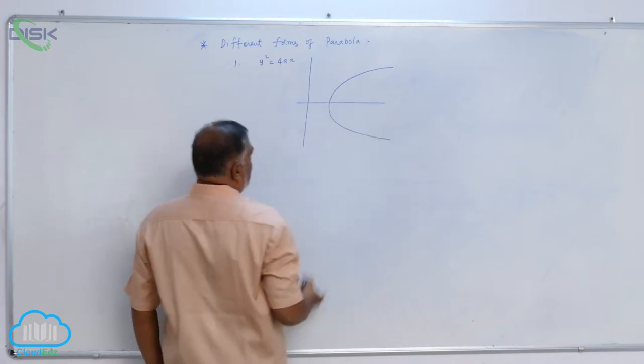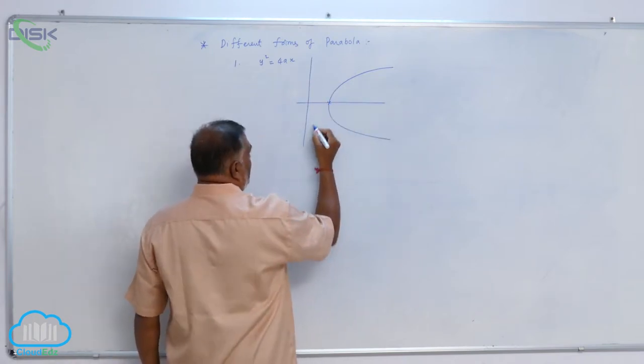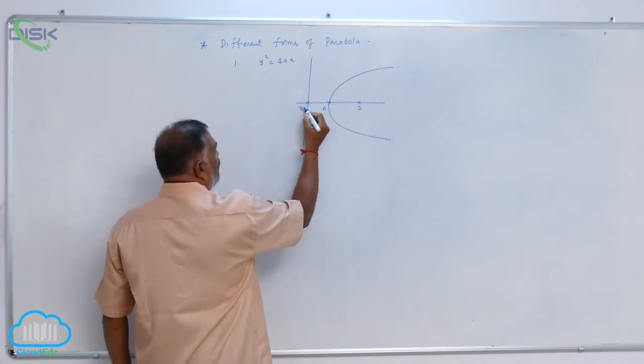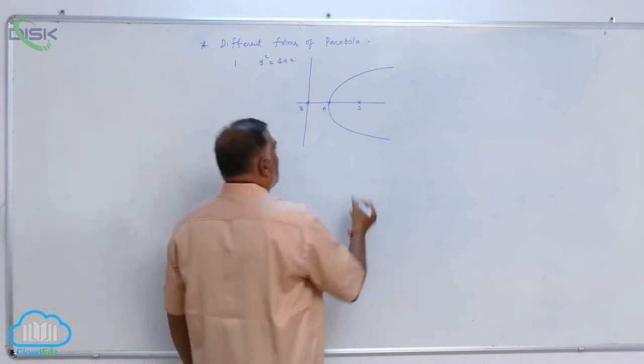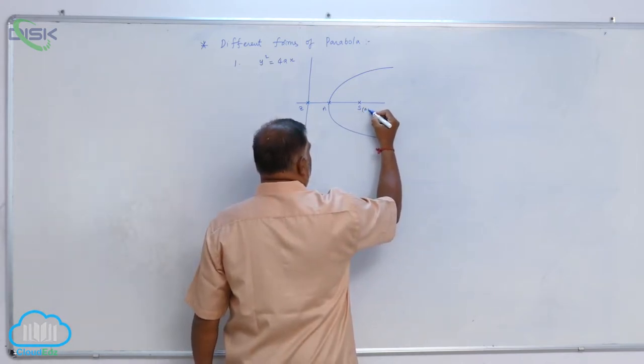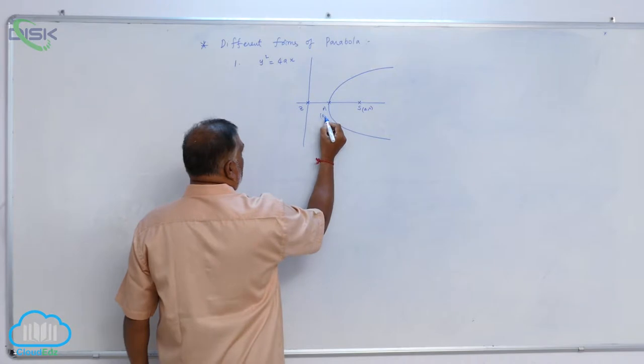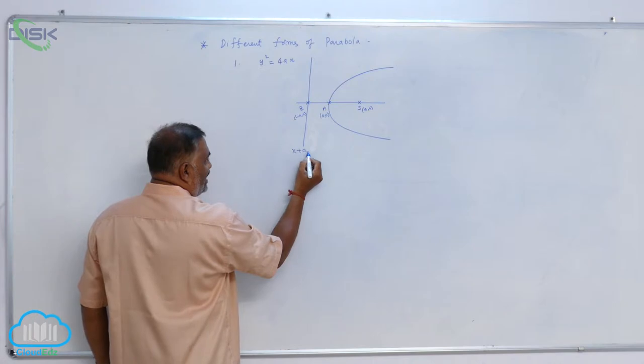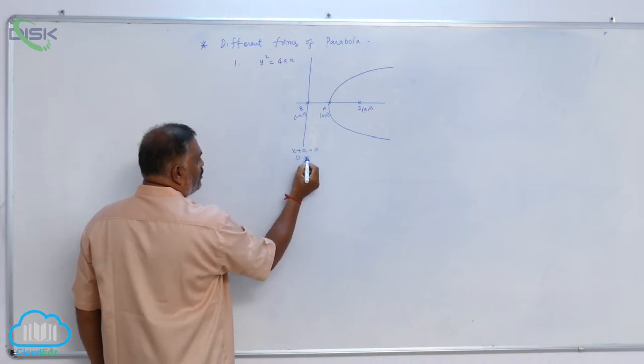Now let us observe. This is going to be vertex, this is going to be focus, this is foot of the directrix. Now this is a, zero. This is zero, zero. This is minus a, zero. This is directrix: x plus a is equal to zero.